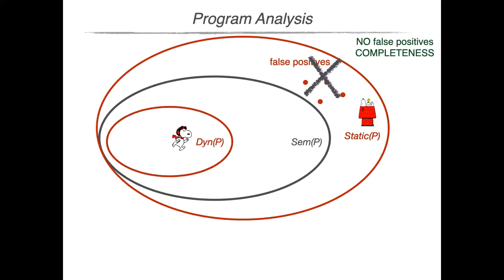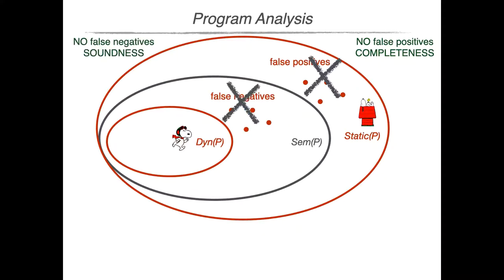On the other hand, dynamic analysis provides an under-approximation of program behavior, and imprecision is given by false negatives — program behaviors that are not considered by the dynamic analysis. Dynamic analysis is precise when we have no false negatives, and in this case we say that the analysis is sound.